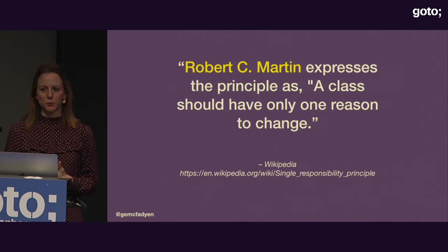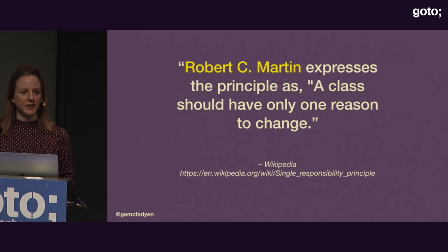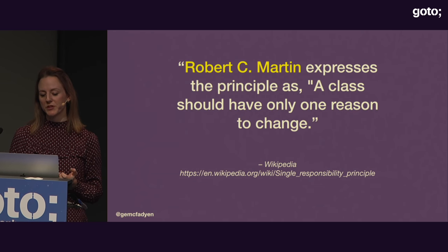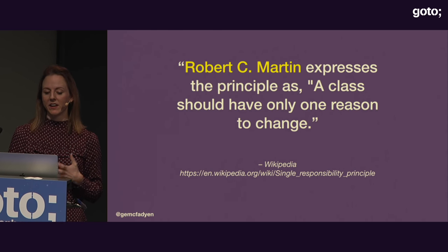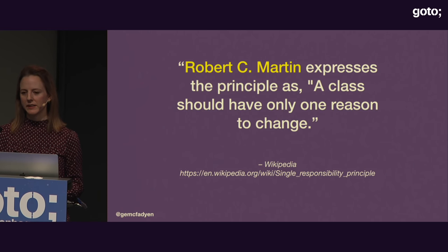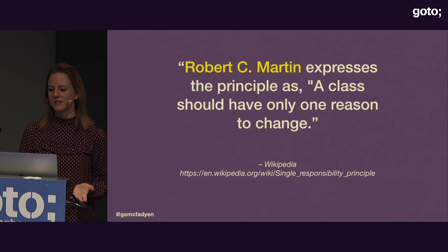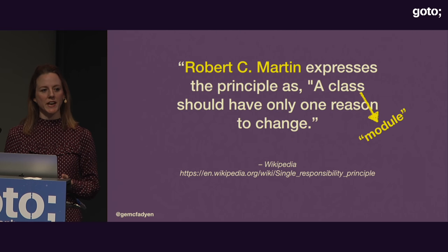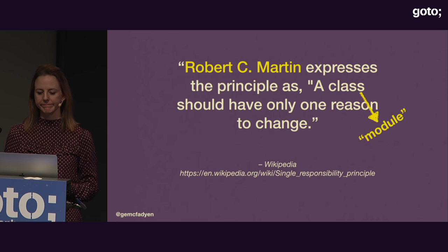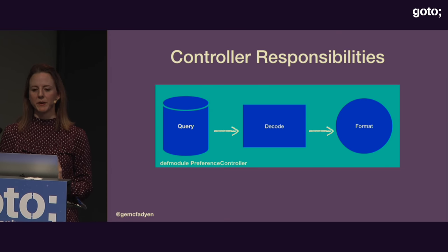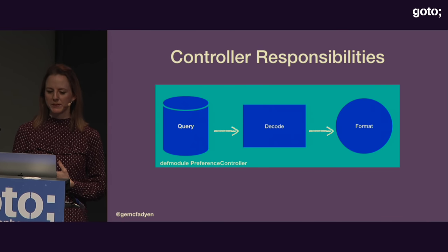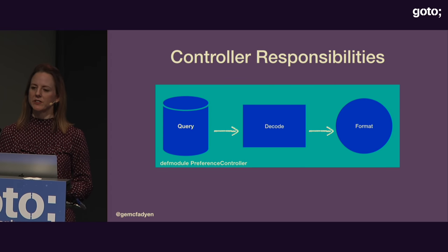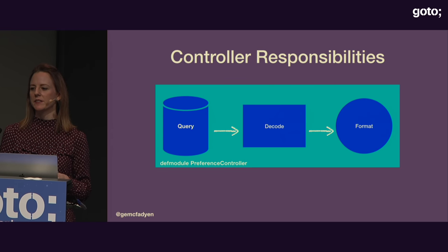There are a few definitions of this principle on Wikipedia, but I favour Uncle Bob's: a class should only have one reason to change. In Elixir we don't have classes — we have modules. So we update this to: a module should only have one reason to change. We started with one module containing three steps, so let's apply this updated definition and see if our solution suits having each step in its own module.